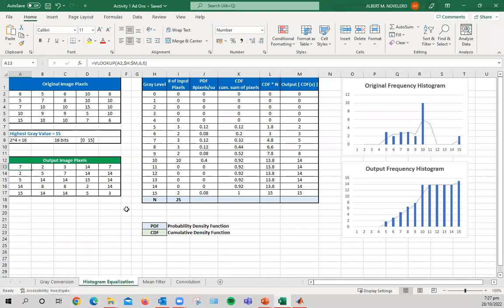So the first thing to do is to determine the highest gray value in this example. And our original image pixel is this one. And as you can see, the highest value is 15. And if we get the binary pixel value that we can get, or the highest gray value, which is 15, it is equivalent to, or the nearest value to it is 16, which is 2 raised to 4, and that is 16 bits. Therefore, we have here 16 from 0 to 15.